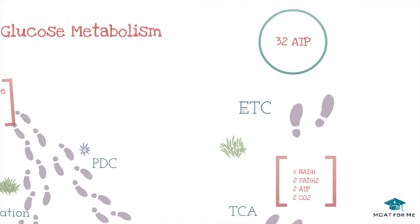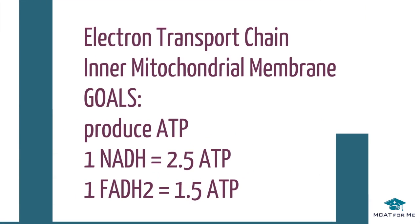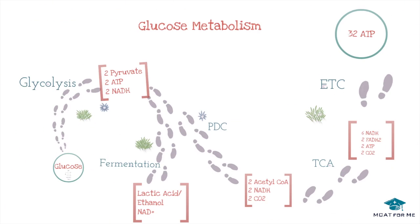Now that we've produced NADH, FADH2, and ATP, our ultimate goal is to produce 32 ATP total. The NADH and FADH2 go into the electron transport chain, which is located in the inner mitochondrial membrane. For every NADH, we produce 2.5 ATP, and for every FADH2, we produce 1.5 ATP. Adding up all NADH, FADH2, and ATP gives us that total of 32 ATP.